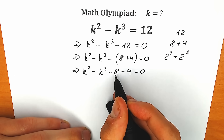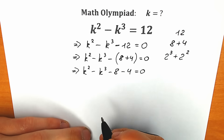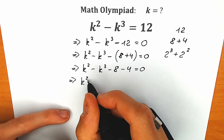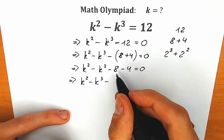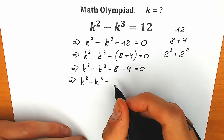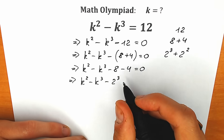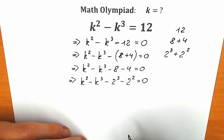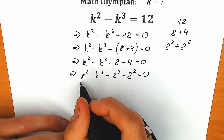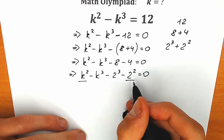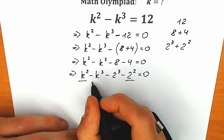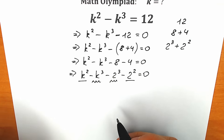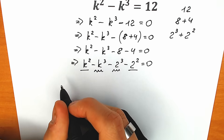Let's change this 8 by 2-cubed and this 4 by 2-squared. So we have k-squared minus k-cubed minus 2-cubed minus 2-squared equal to zero. Now we have k-squared and 2-squared, so we can group the squares. And we have k-cubed and 2-cubed, so we can group the cubes. Let's group squares and cubes.